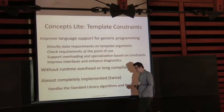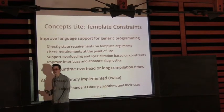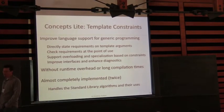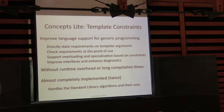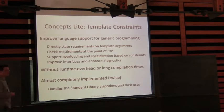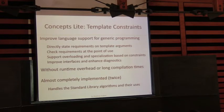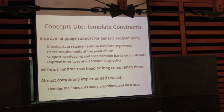Concepts Lite tries to address a lot of these features. In particular, we're looking to improve support for generic programming by allowing programmers to directly state requirements on template arguments. We want to check those template arguments at the point of use, rather than allowing the instantiation to proceed and diagnose errors when they occur inside the instantiation. We want to support overloading based on constraints and class template specialization based on constraints. The end goal is to improve interfaces and get better diagnostics out of the compiler, without runtime overhead.